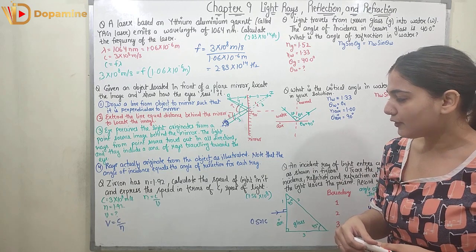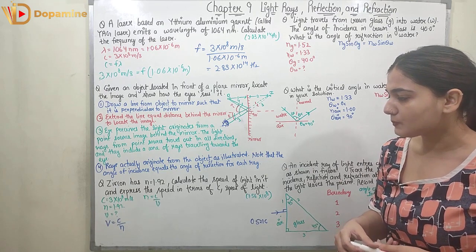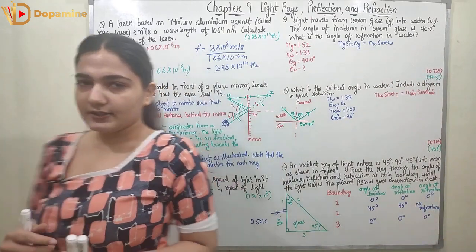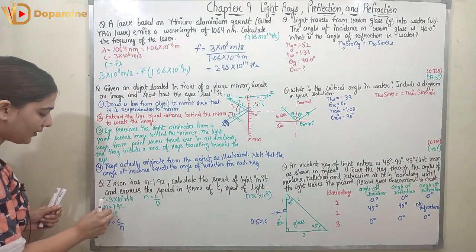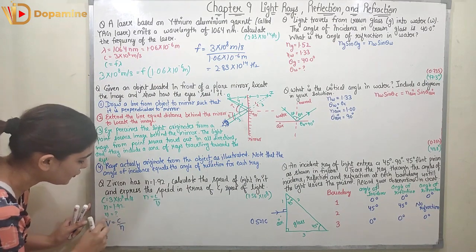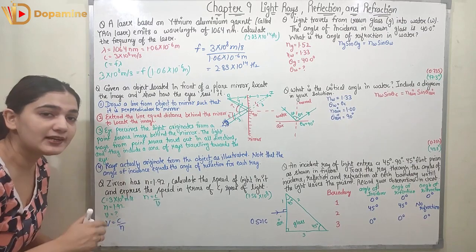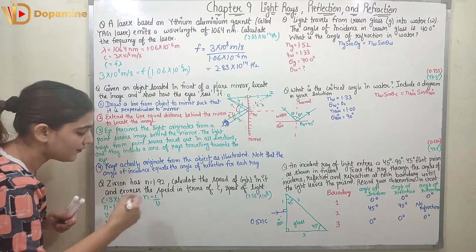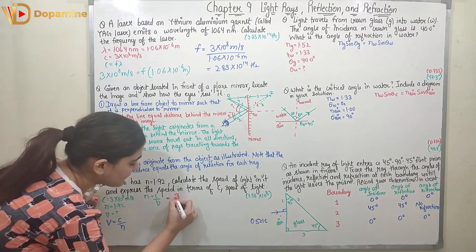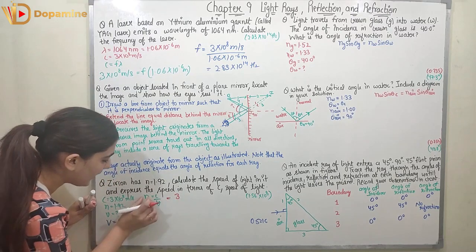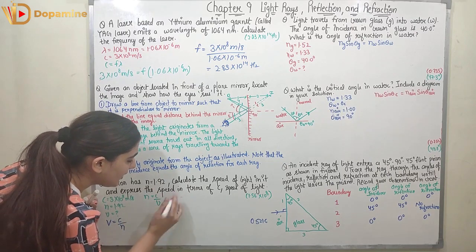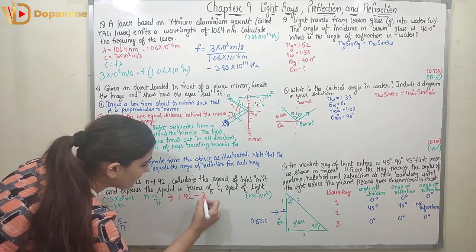Coming to the next question: zircon has n = 1.92. Calculate the speed of light in it and express the speed in terms of the speed of light in vacuum. We know c = 3 × 10⁸ m/s and n = 1.92. The relationship is: refractive index n = speed of light in vacuum / speed of light in medium.